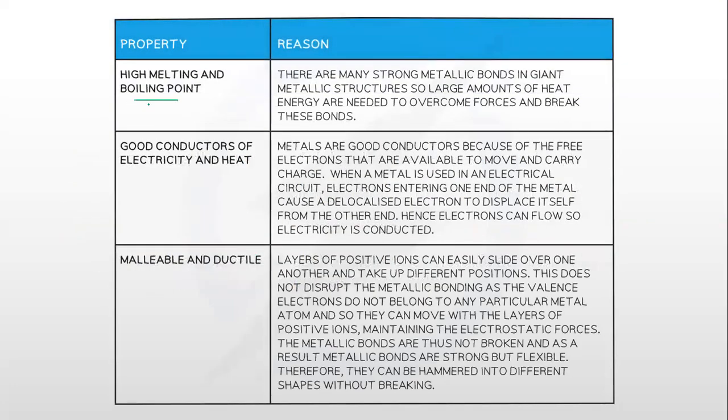High melting and boiling point. Why do metals have high melting and boiling points? Because there are many strong metallic bonds in giant metallic structures, so large amounts of heat energy are needed to overcome forces and break these bonds.